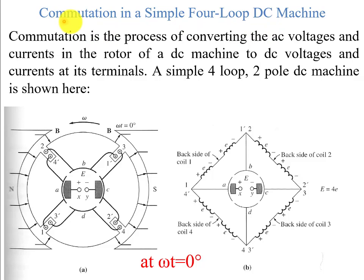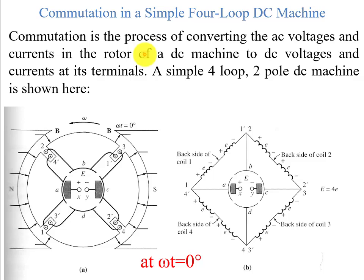One of the basic problems we have seen is armature reaction. Now let's look at commutation. As we know, commutation is the process to convert the AC voltages and currents in the rotor of a DC machine to DC voltages and currents at its terminals.